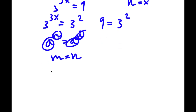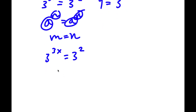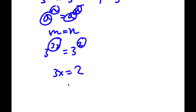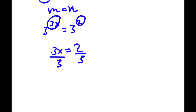So for 3 to the power of 3x equals 3 to the power of 2, the exponents 3x and 2 must be equal. So now we have the simple equation 3x is equal to 2. Dividing both sides by 3, these cancel out and I get x is equal to 2 over 3.